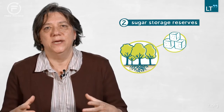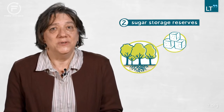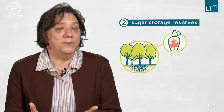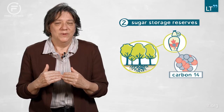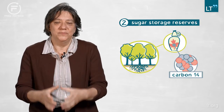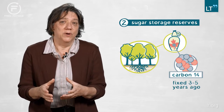A second example of using bomb carbon-14 is that we can look at faster processes, like how old the sugars are that trees use as their storage reserves. The most interesting example of this is that we used the carbon-14 in maple syrup to determine that the carbon used in that sugar was fixed on average three to five years ago.